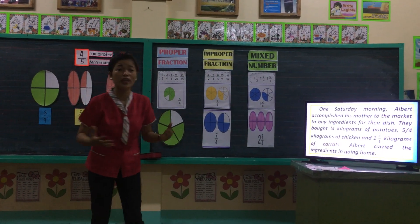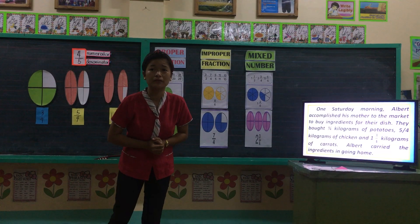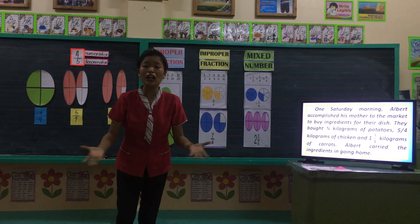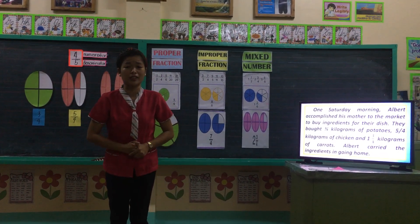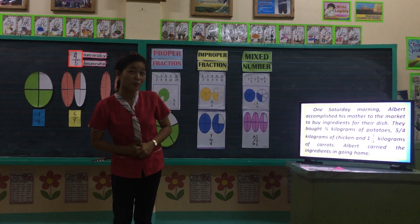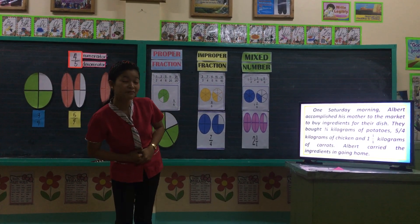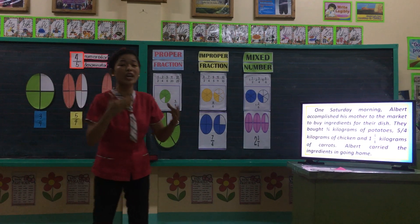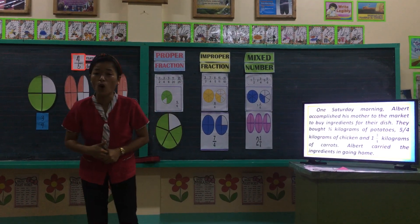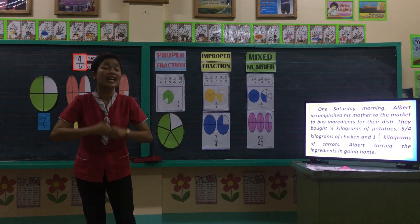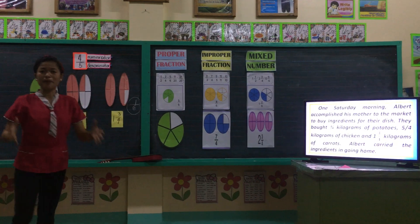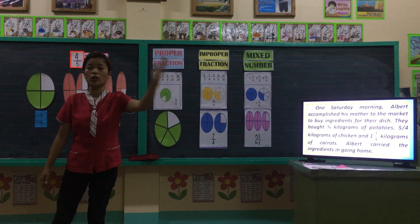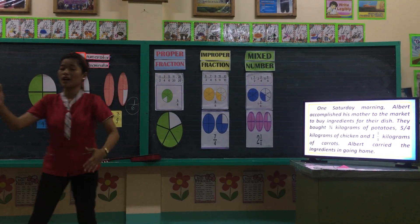What kind of boy is Albert? He is a helpful person. Will you do the same for your mother? Of course, yes — because we need to help someone who is in need. So this time, I will group you into three: first group, second group, and third group.